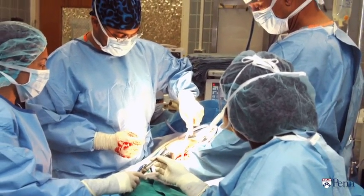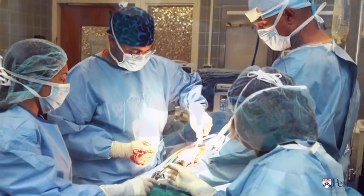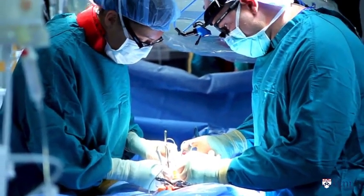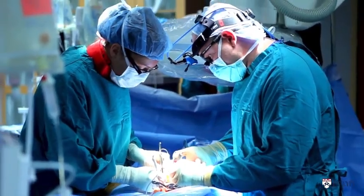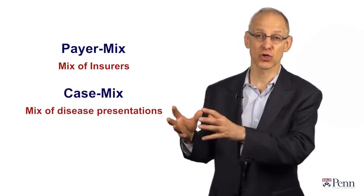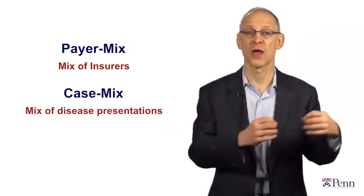Similarly, hospitals get paid more for certain kinds of conditions — neurosurgery, cardiac surgery, orthopedic surgery, transplants, and cancer care — and less for things like psychiatric care or treatment of patients with minor infections. This is called case mix adjustment. Hospitals prefer more surgical procedures and fewer medical procedures.